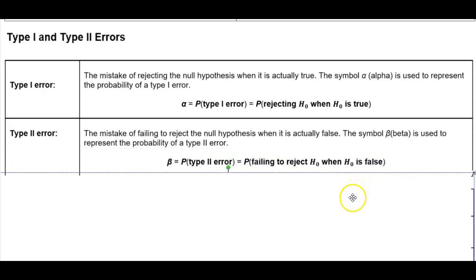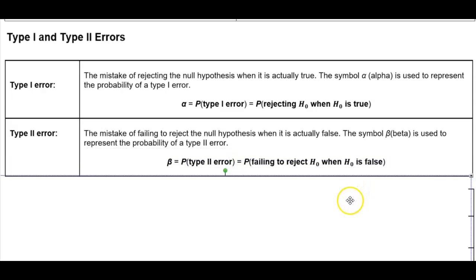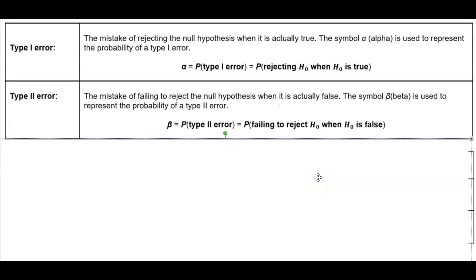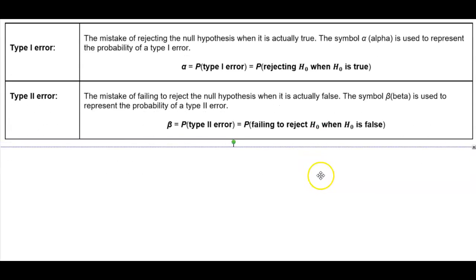A type 2 error is the mistake of failing to reject the null hypothesis when it is actually false. The symbol beta is used to represent the probability of a type 2 error. Beta is equal to the probability of a type 2 error, which is equal to the probability of failing to reject the null hypothesis when the null hypothesis is actually false.